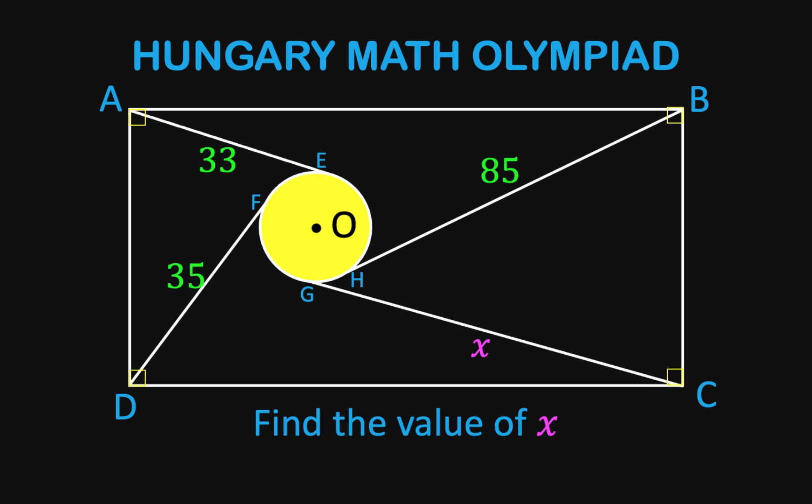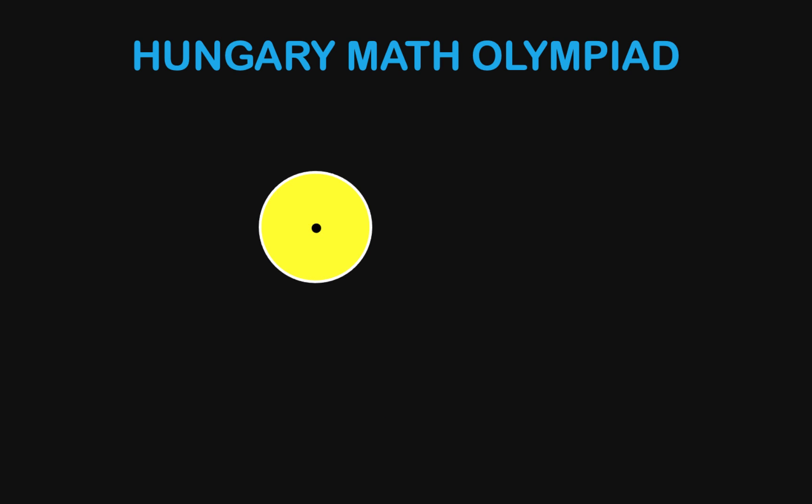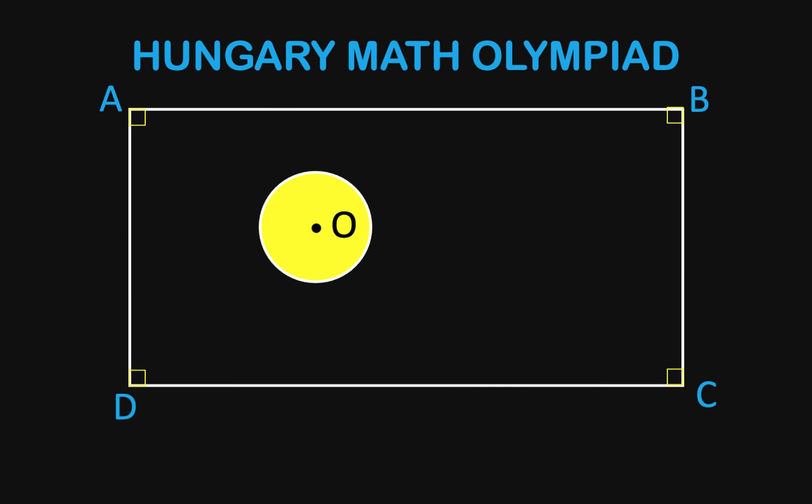Hey everyone, here is our math problem for today. Let's begin with this yellow circle O and this rectangle ABCD. From each corner of this rectangle, let's draw a line segment that is tangent to the yellow circle at point E, F, G, and H.